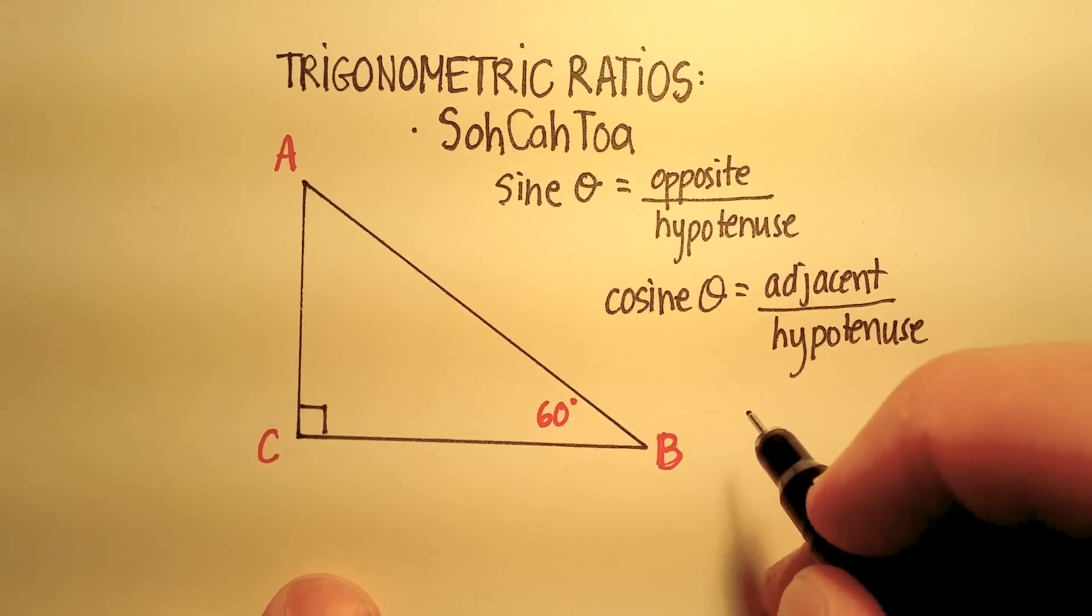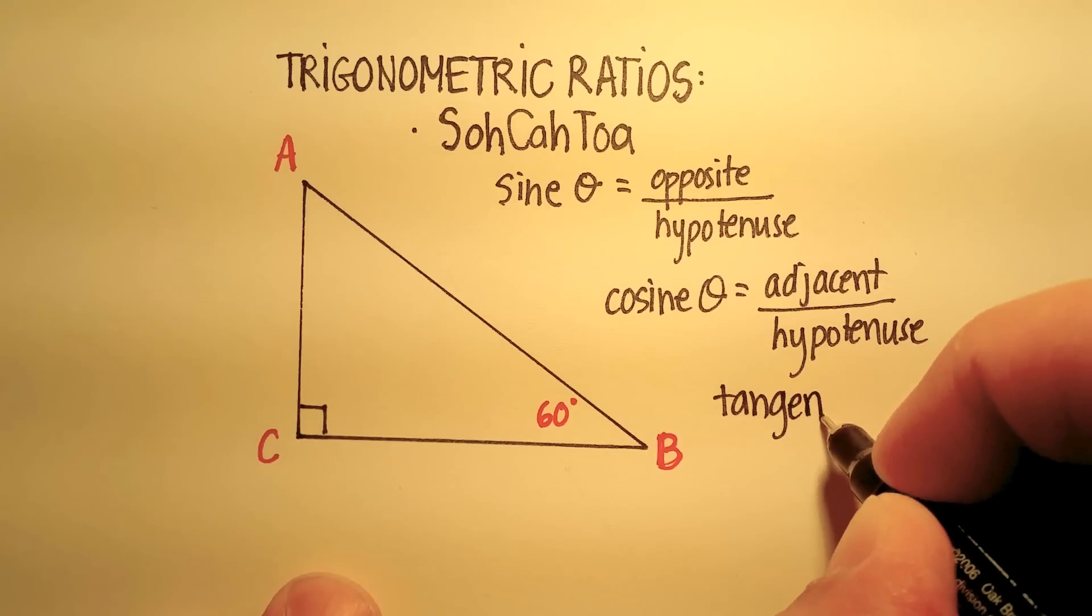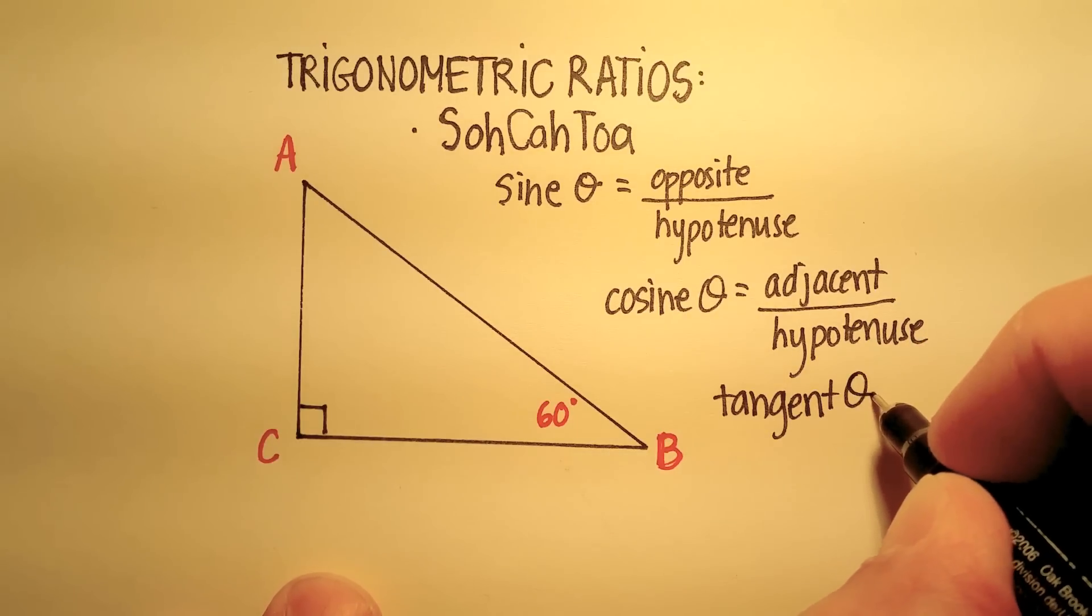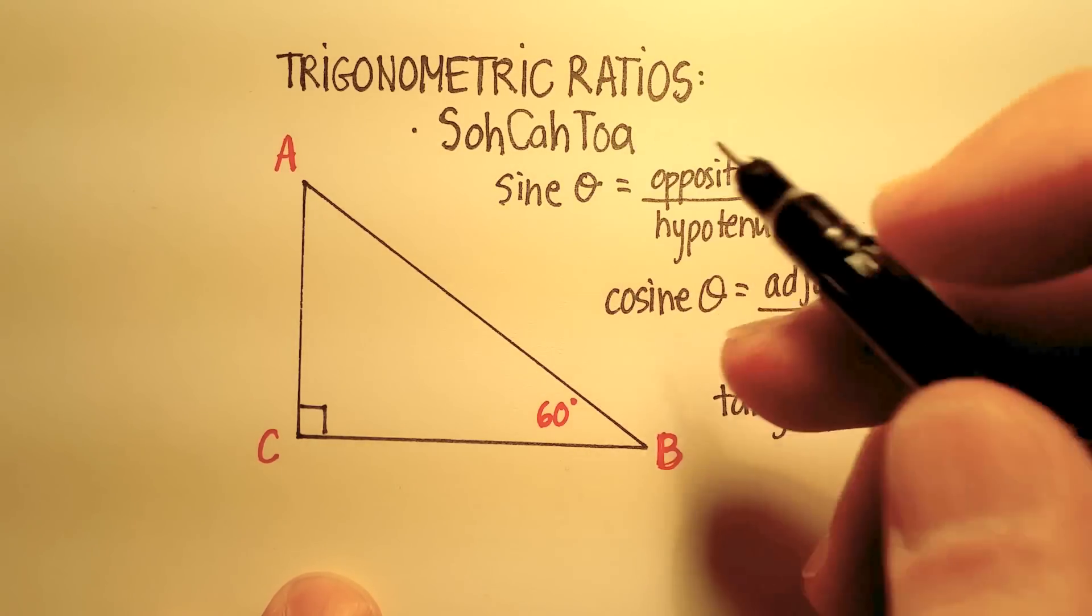And then finally, the T stands for something called the tangent. So tangent theta is equal to the opposite side over the adjacent side.